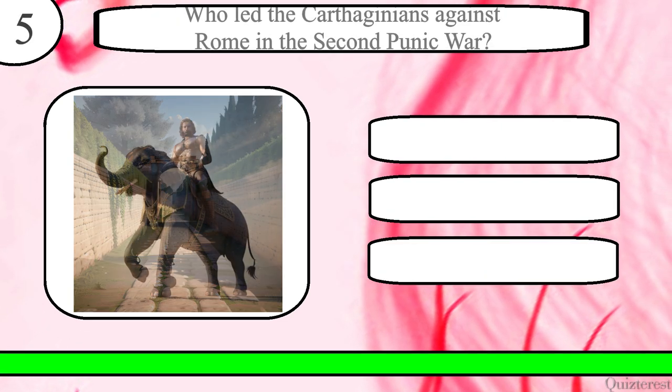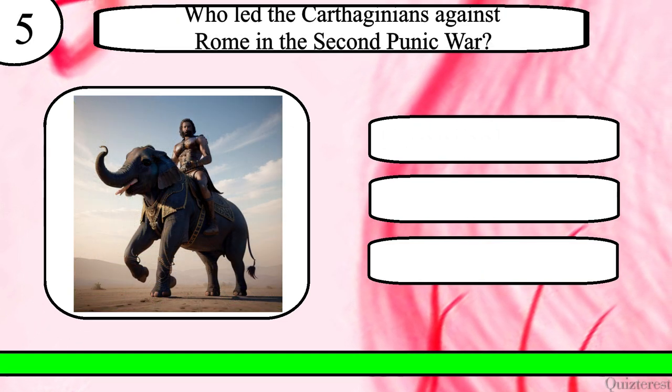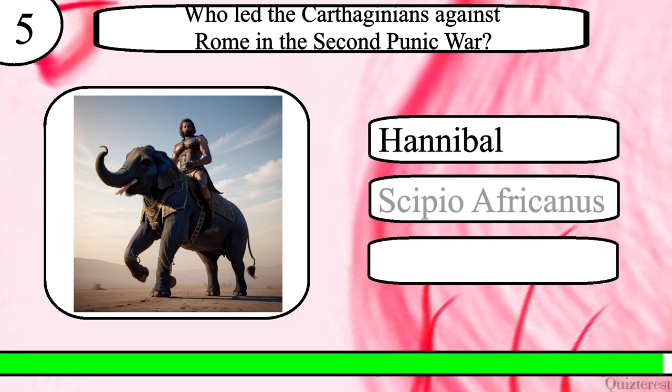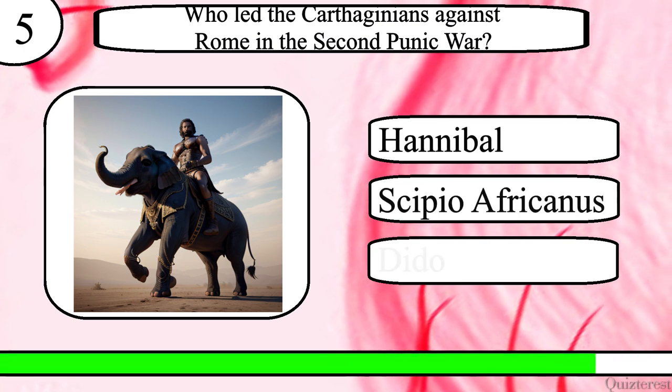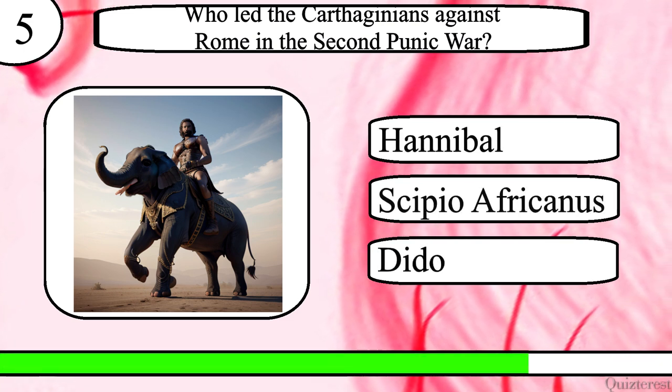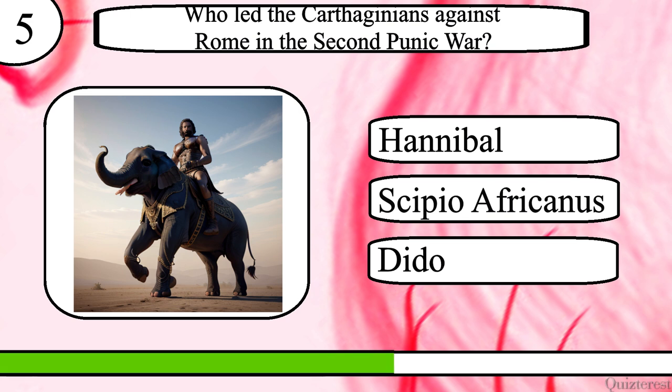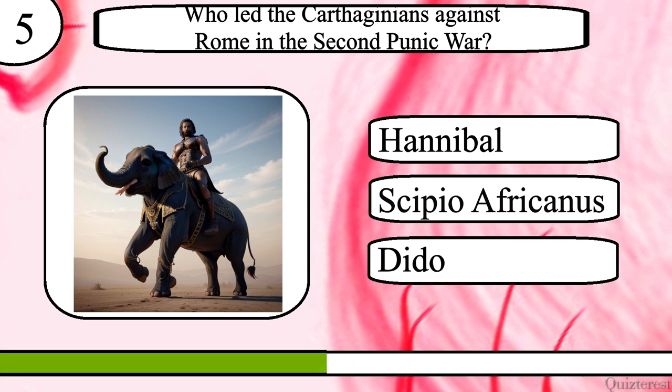Question 5. Who led the Carthaginians against Rome in the Second Punic War? Hannibal, Scipio Africanus or Dido?